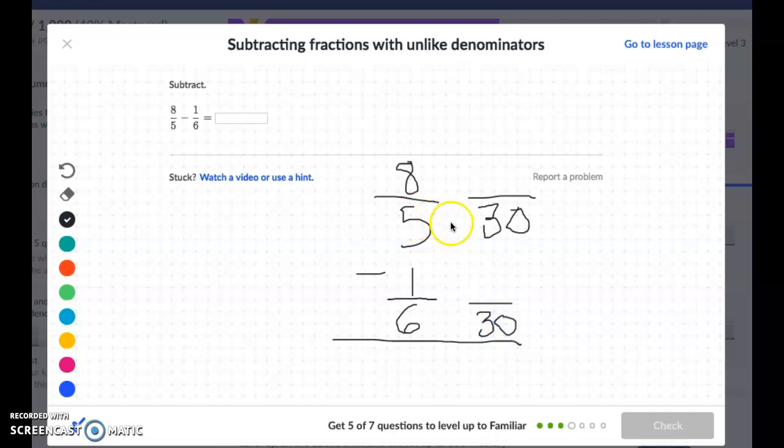So 5 times 6 is 30, 8 times 6 is 48. And then 6 times 5 is 30, so 1 times 5 is 5. And then again, big factor here, remember we're subtracting. So 48 take away 5 is 43, so 43 and 30, our denominator stays the same.